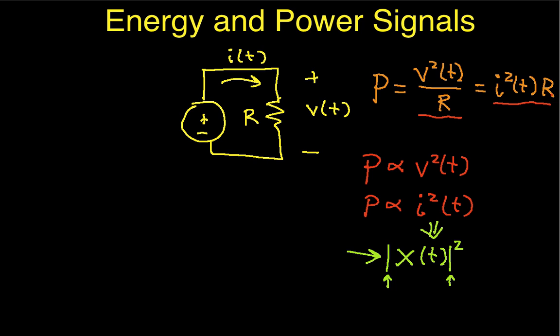That's why we've represented this definition with the magnitude squared — so that if we have a complex signal, our definition still holds. This gives us essentially instantaneous power: the power that is instantaneously delivered by a signal X of T at time T.